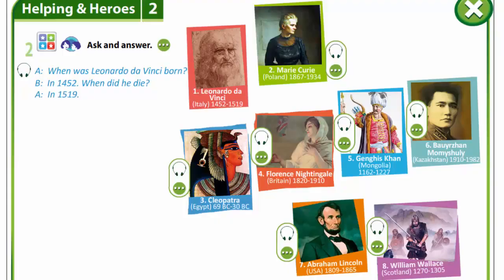When people start their lives, we say he was born or she was born. When they finish their life, we use the verb die — when did he die? And we answer he died in the year. There are dates of historical figures with the pictures. Now you are to ask and answer when he or she was born and when they died.